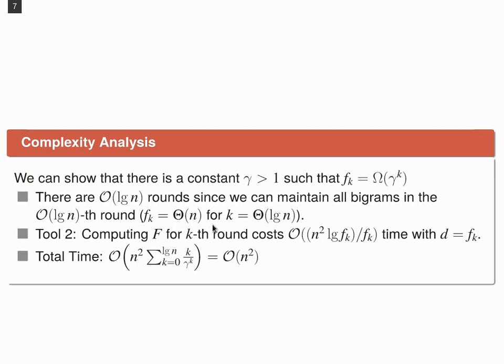During the k-th round, when we compute f with tool 2, this costs us n squared log fk over fk time, by setting the parameter d to fk. Now, when we sum up all time costs for each round, this gives us this expression and doing the sum gives us order n squared time.